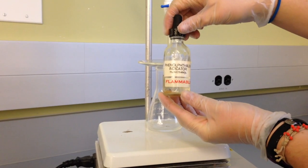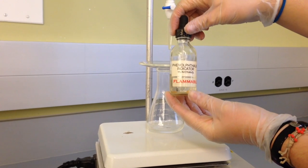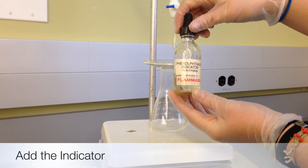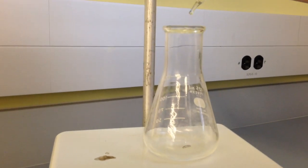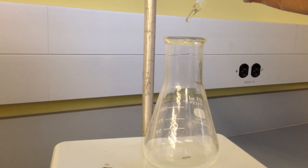Now that our burette is set up, we will prepare our solution to be titrated. We will now add an indicator, in this case two drops of phenolphthalein, that will turn the solution pink once the acid is neutralized.